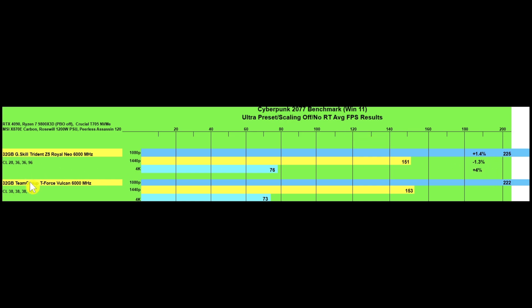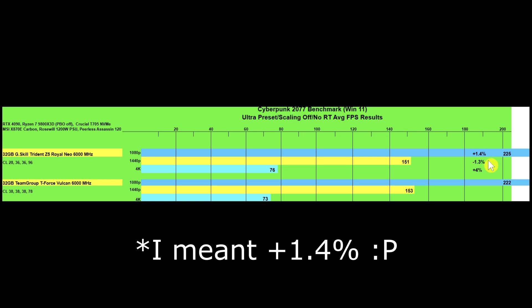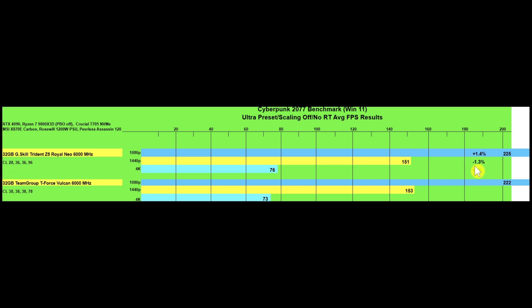There wasn't a huge difference here between the two kits. At 1080p we got 225 versus 222 frames — a difference of three frames, so plus 1.5% gain for the CL28 kit. At 1440p we see a minus 1.3% difference at 151 versus 153. And at 4K we gain 4% at 76 versus 73 frames. A lot of this is really run variance more than anything else from what I can tell, and you'll see what I mean as we go on.